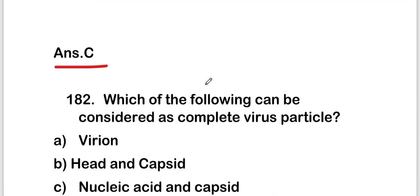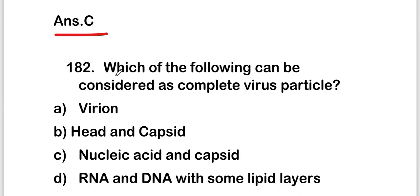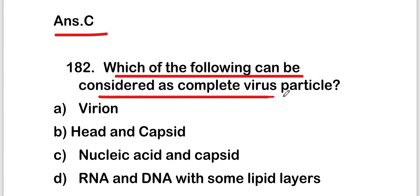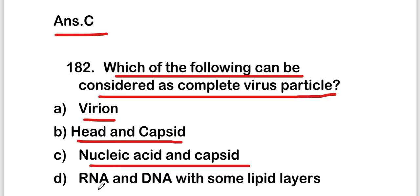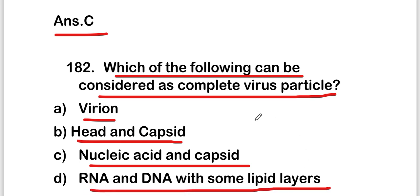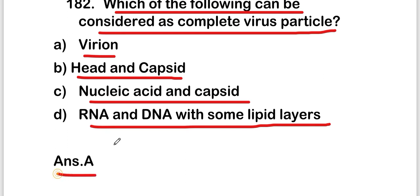The next question: which of the following can be considered a complete virus particle? Options are: virion, virion head and capsid, nucleic acid and capsid, or RNA and DNA with some lipid layers. The right answer is option A — virion. A virion can be considered a complete virus particle.